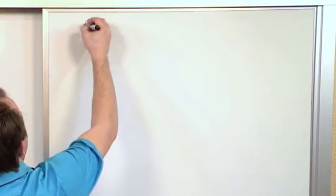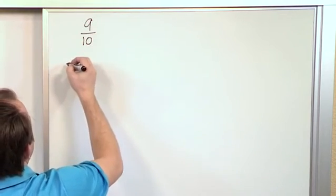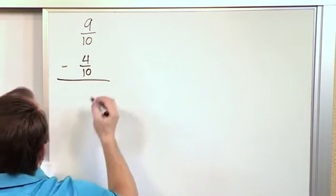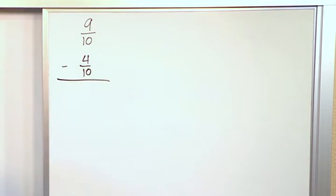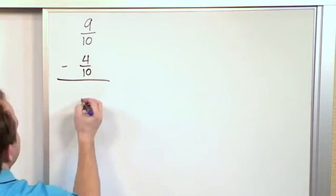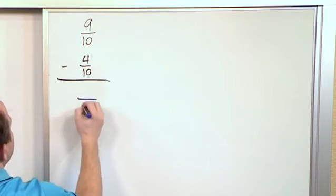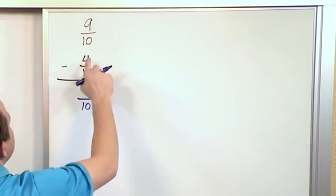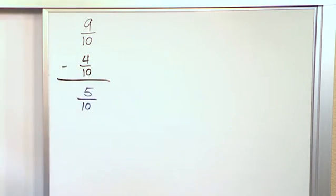Alright the next problem, what if we had 9/10 and we're subtracting from that 4/10 like this. So same story again, we're just checking to see do we have a common denominator and we do, so we carry 10 in the answer and we subtract the numerators. 9 minus 4 gives us 5. Right so we check and see is this fully simplified.